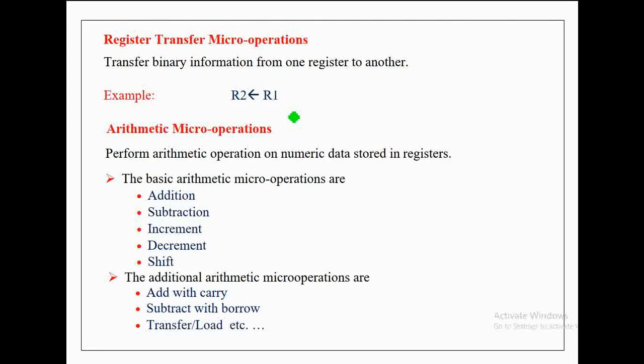The content of R1 is transferred into R2. The content of R1 is not changed when a register transfer operation is performed — that is, the content of the source register is left intact whenever a register transfer micro operation is performed.